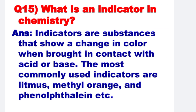Next: What is an indicator in chemistry? Indicators are substances that show a change in color when brought in contact with an acid or base. The most commonly used indicators are litmus, methyl orange, and phenolphthalein.